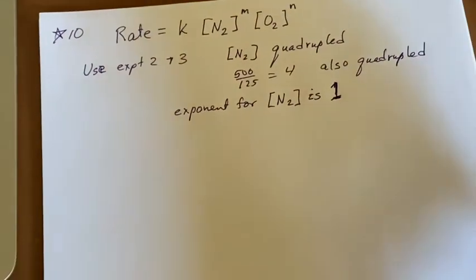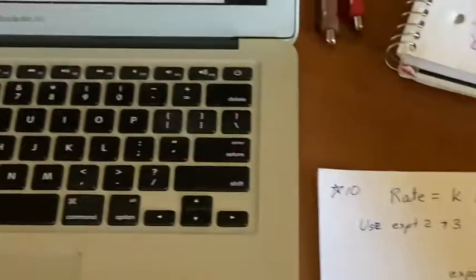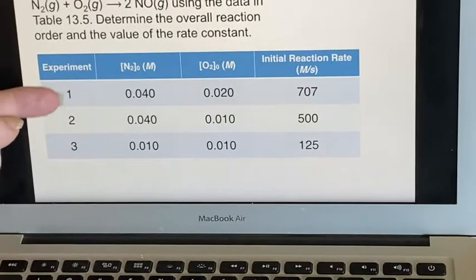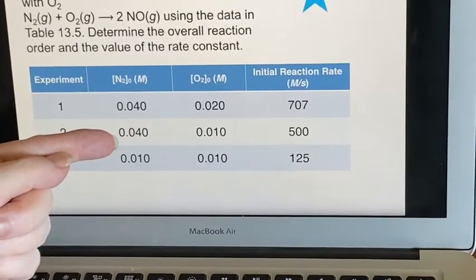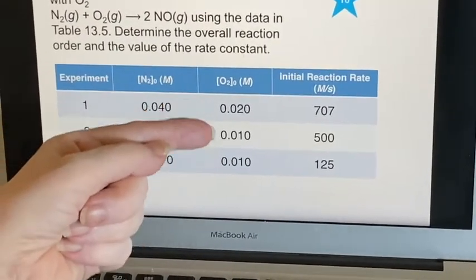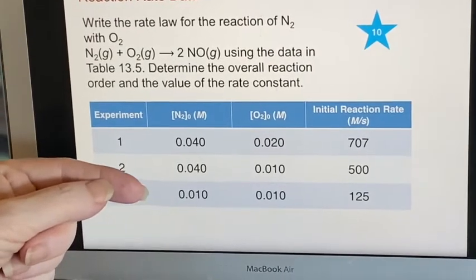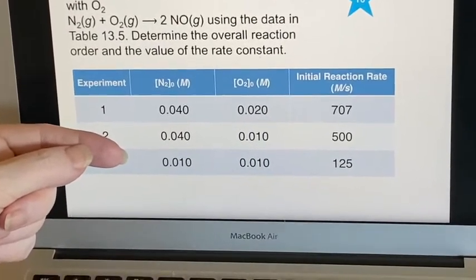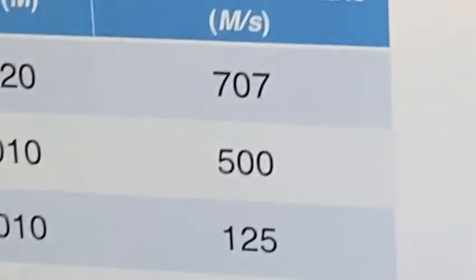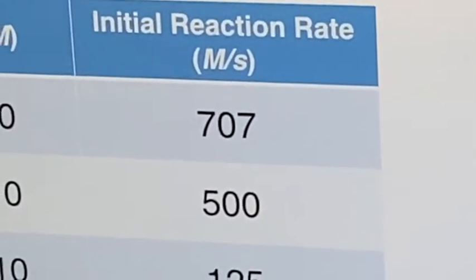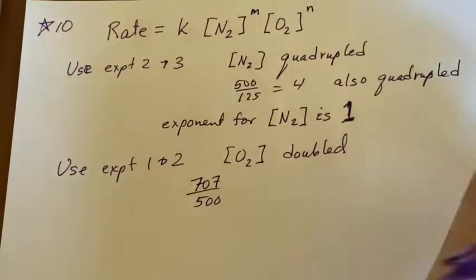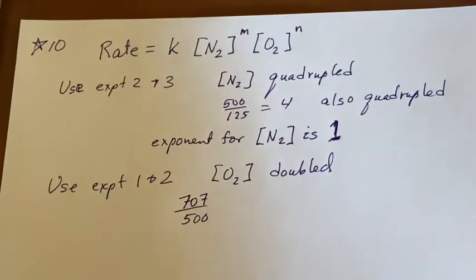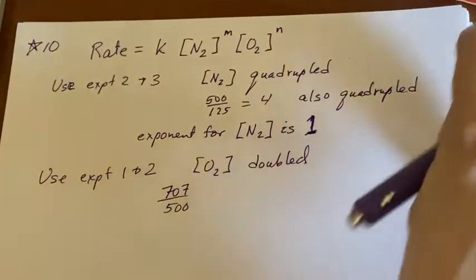So let's look and see what we can do about oxygen then. So if I look at experiments one and two, I see nitrogen is held the same. Oxygen is doubled. And we can see that oxygen concentration was doubled. The reaction rate, 707 over 500, well that's not one. This is where you have to pull out the other way of doing things, the logarithm method.